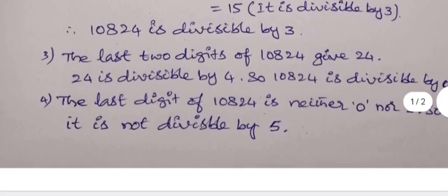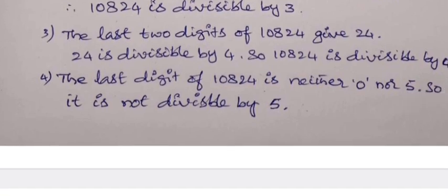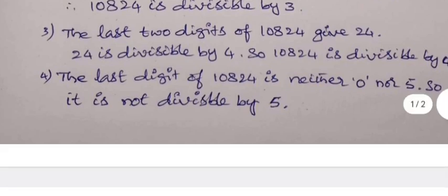Divisibility rule for 4 is: the number present in the last two digits, or the number formed by the last two digits is divisible by 4, then the given number is divisible by 4. Here the number obtained by taking the last two digits in the same order is 24.